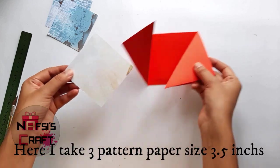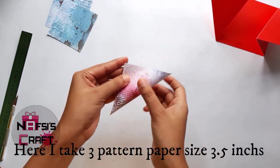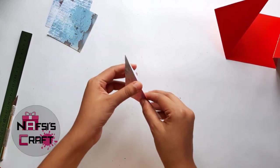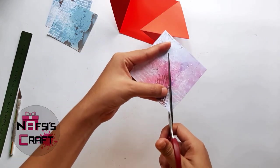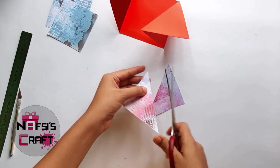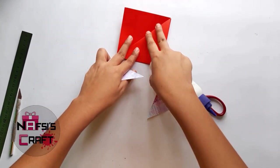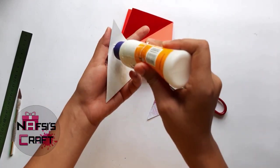Here I take three pattern paper size of 3.5 inches. Now fold it from the corner and then cut. I use this paper for decorating. You can also use any kind of color paper.